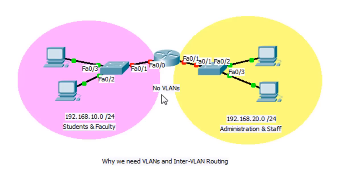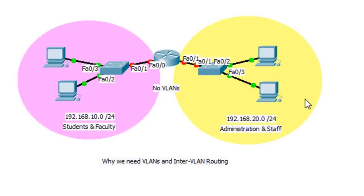In this scenario, we have no VLANs. If you're students and faculty, you need to connect to this switch, which connects to the router — this is all the student and faculty network. We could add additional switches and computers here. Over here on the other switch, there are also no VLANs, so if you're on the 20 network, you're administration and staff and need to connect to that switch, which connects to the router and goes to the internet.